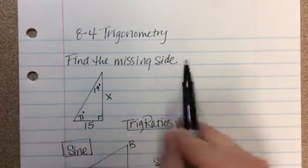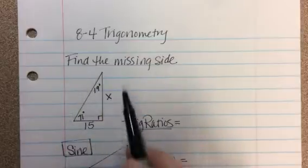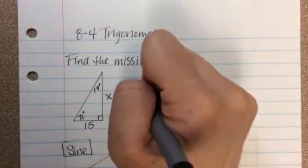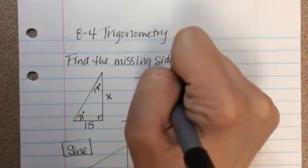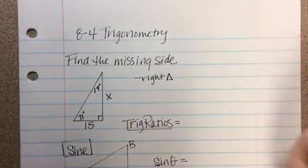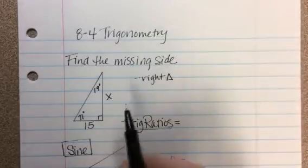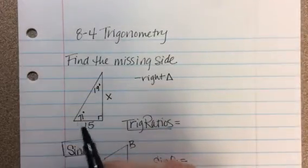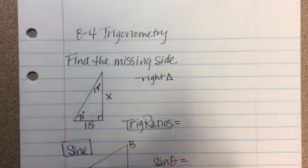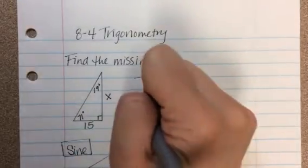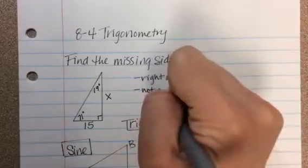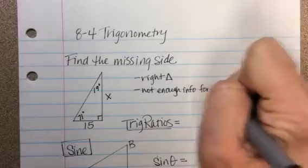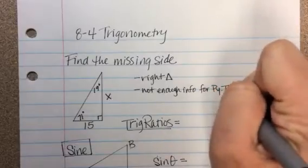In our first problem, if we had to find the missing side X, you can see that this is a right triangle. Normally we would try to use the Pythagorean theorem, but noticing that we have a 15 and X, we don't know the hypotenuse — we don't have enough information for the Pythagorean theorem here.